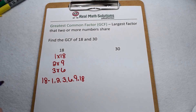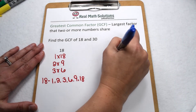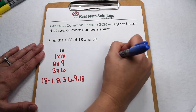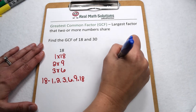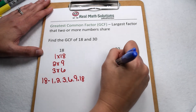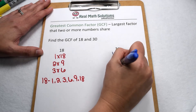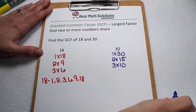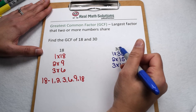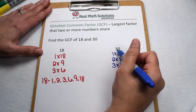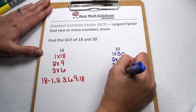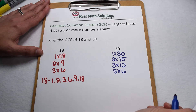Now we can look at our factors of 30. We know our first factor pair of 30 is going to be 1 times 30. Since 30 is even, we know we can also do 2 times 15. 30 is divisible by 3, so 3 times 10 would be another factor pair. If we check divisibility rules, 30 isn't divisible by 4, so next we would check 5. 30 is divisible by 5, so that brings us to the factor pair 5 times 6.